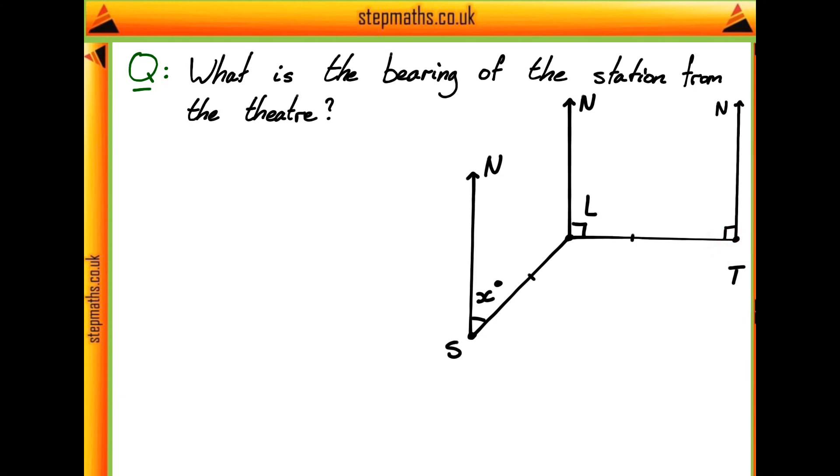So we can label this with an arrow going from the theatre down to the station, and our bearing is always measured clockwise from north, being this part here. So you can see as well that I've labelled this angle of y degrees on here. This is probably going to be quite useful because now we have all of the angles around our point t, our theatre, labelled on properly.